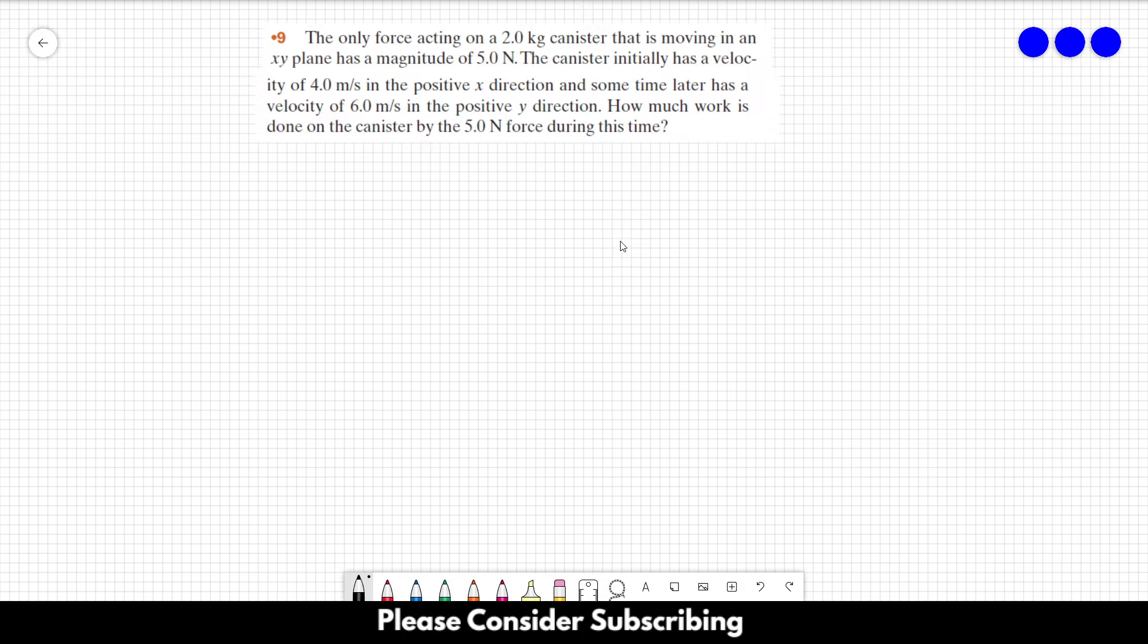How much work is done on the canister by the 5 newton force during this time? So we have our initial velocity which is equal to 4 in the i direction meters per second and our final velocity is equal to 6j hat meters per second.